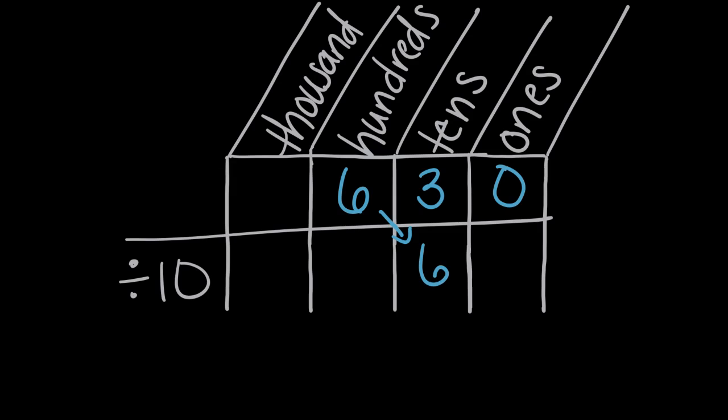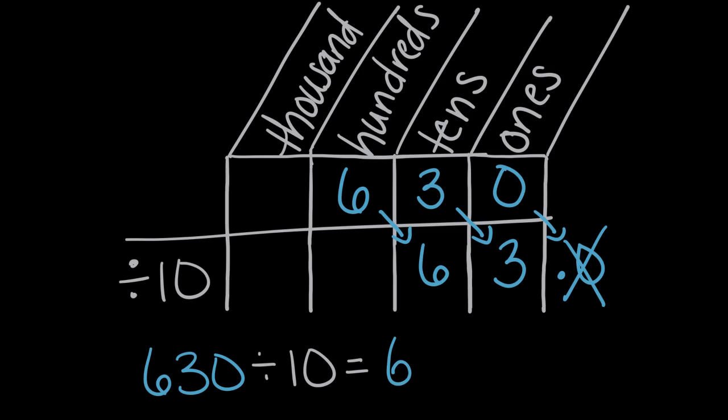So the six hundreds will become six tens, three tens will become three ones, and the zero ones will move after the decimal. So we can say that 630 divided by 10 is equal to 63, or six tens and three ones.